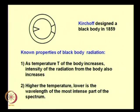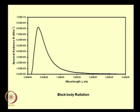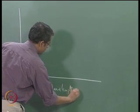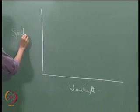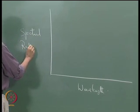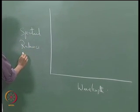On the x-axis we have wavelength, and on the y-axis we are plotting spectral radiance. Spectral radiance is simply intensity per unit wavelength. The units for this are watts per meter cubed — if you talk of power per unit area, that is watts per meter squared, and spectral radiance is power per unit area per unit wavelength, giving watts per meter cubed.